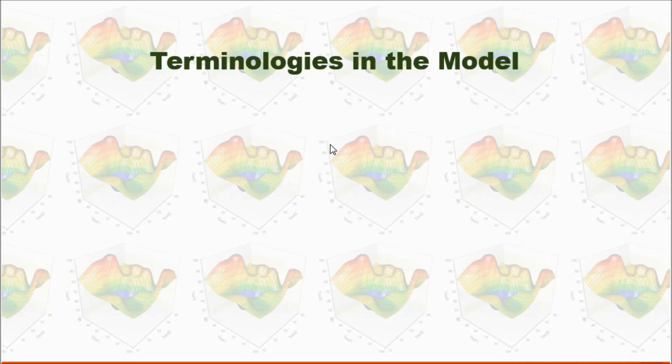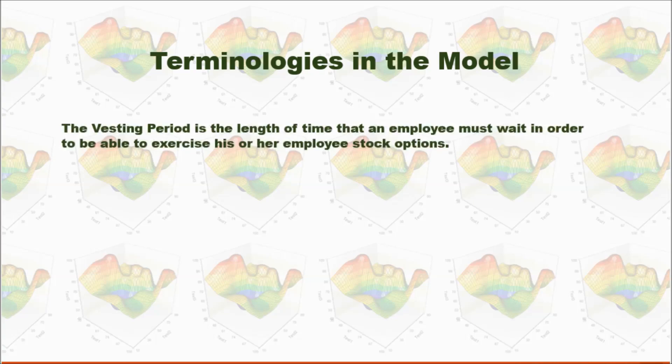Let's take a look at the terminologies used in the model. The vesting period is the length of time that the employee must wait in order to be able to exercise his or her employee stock options. That means during vesting period, the employee cannot exercise the stock options.